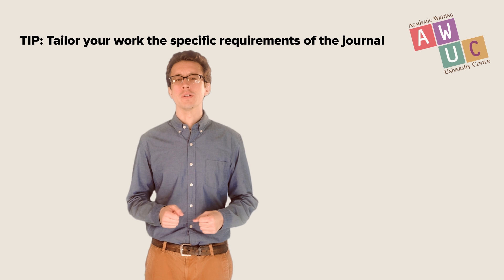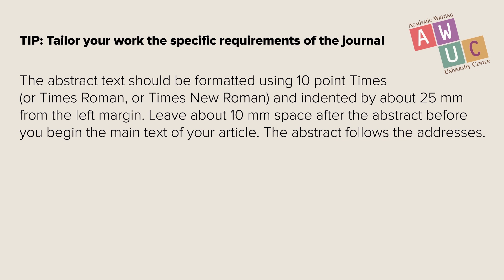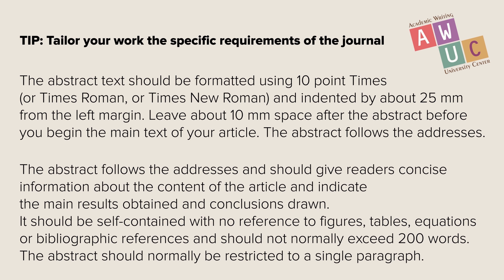Two: when submitting an abstract to a journal, be sure to review the specific requirements for that journal. For example, when submitting a work to a journal published by IOP Science, you should note the following specifications: the abstract text should be formatted using 10-point Times, Times Roman, or Times New Roman, and indented by about 25 millimeters from the left margin; leave about 10 millimeters space after the abstract before beginning the next part of your article. The abstract should give readers concise information about the content of the article, indicate the main results obtained and conclusions drawn, be self-contained with no reference to figures, tables, equations, or bibliographic references, and should not normally exceed 200 words.